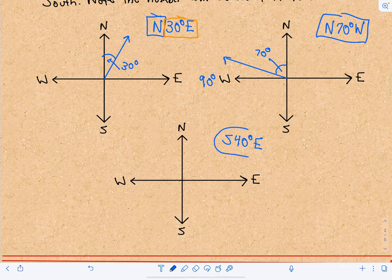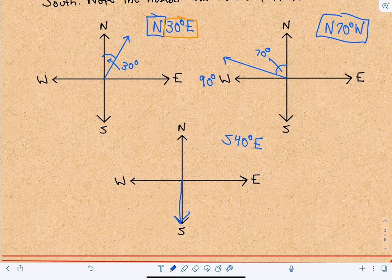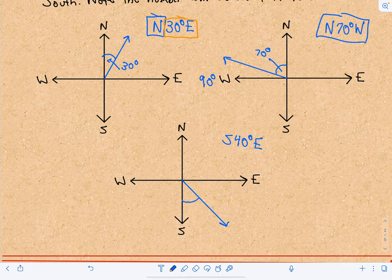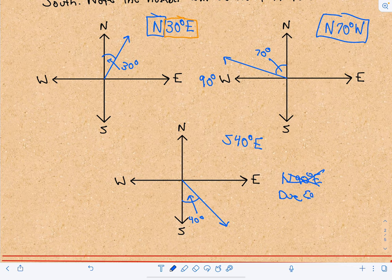Last but not least, let's use S40°E. So we're at south, 40 degrees east. Now I'm measuring my angle not from the north as in the previous examples, but starting from south and moving 40 degrees to the east. You wouldn't say north 90 degrees east — you would just say due east.